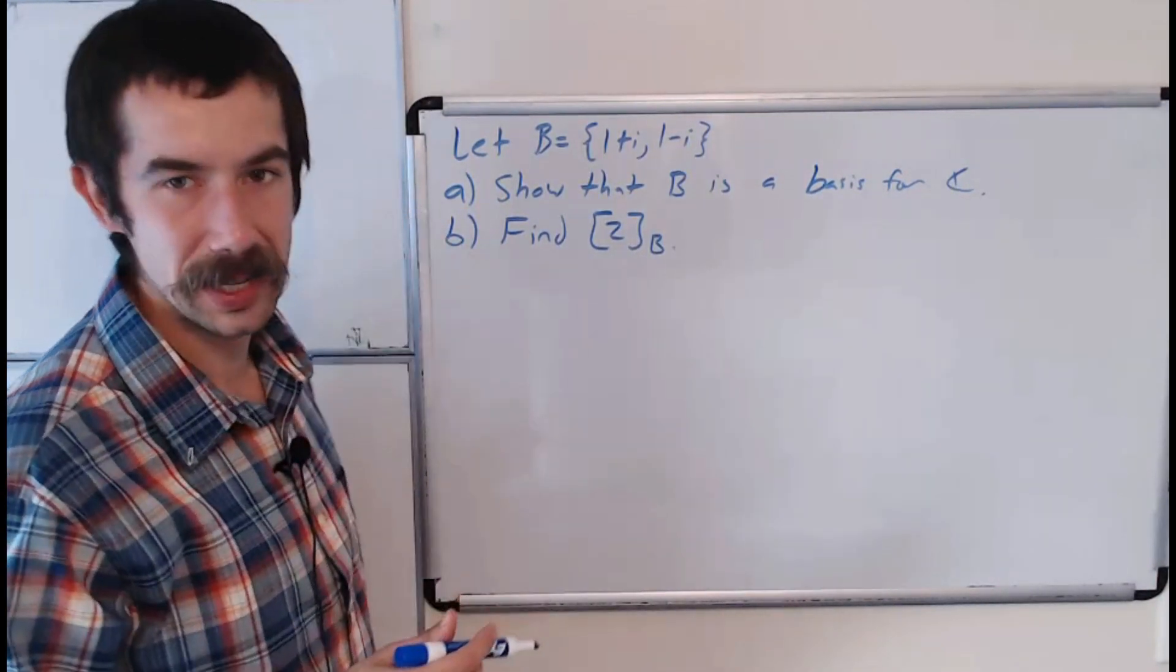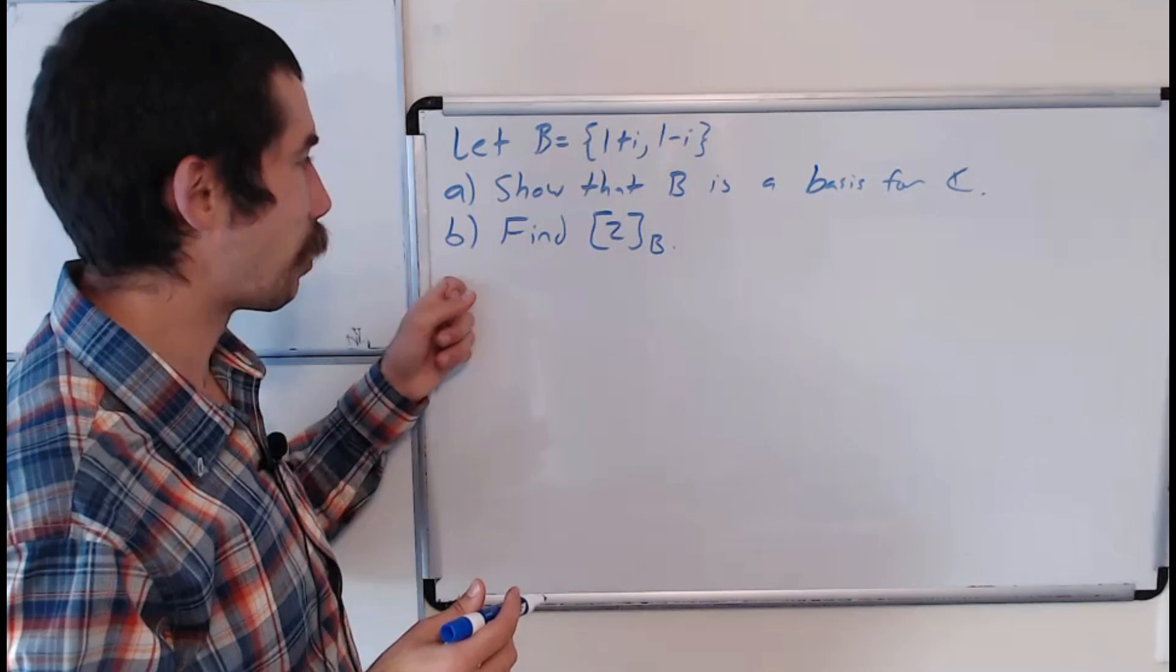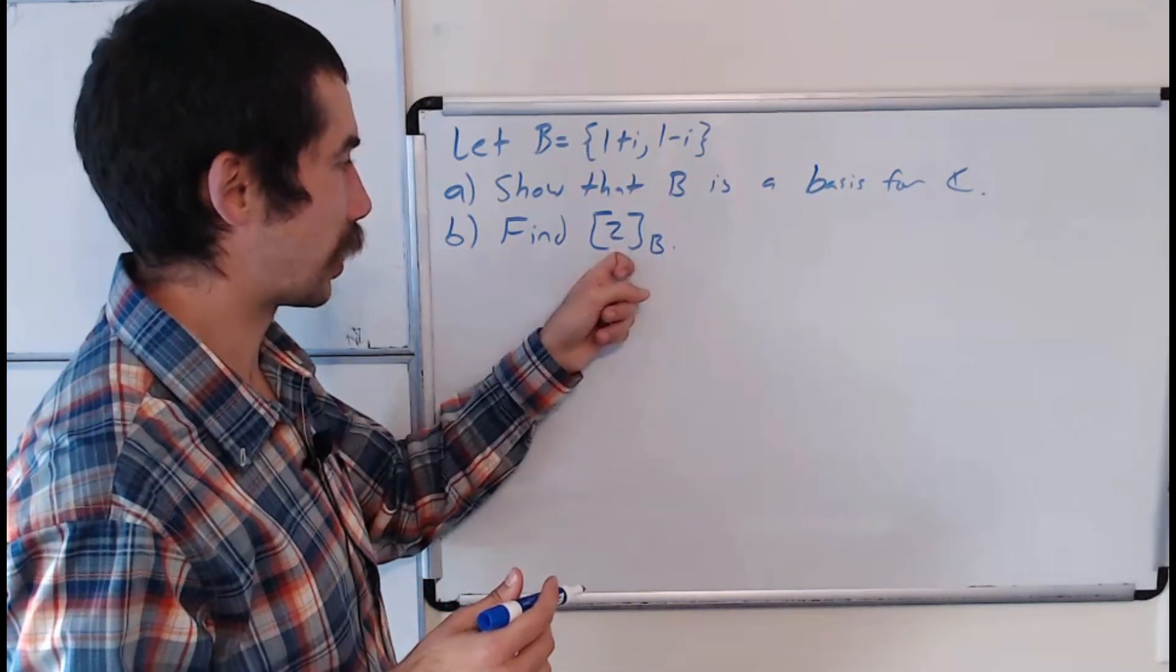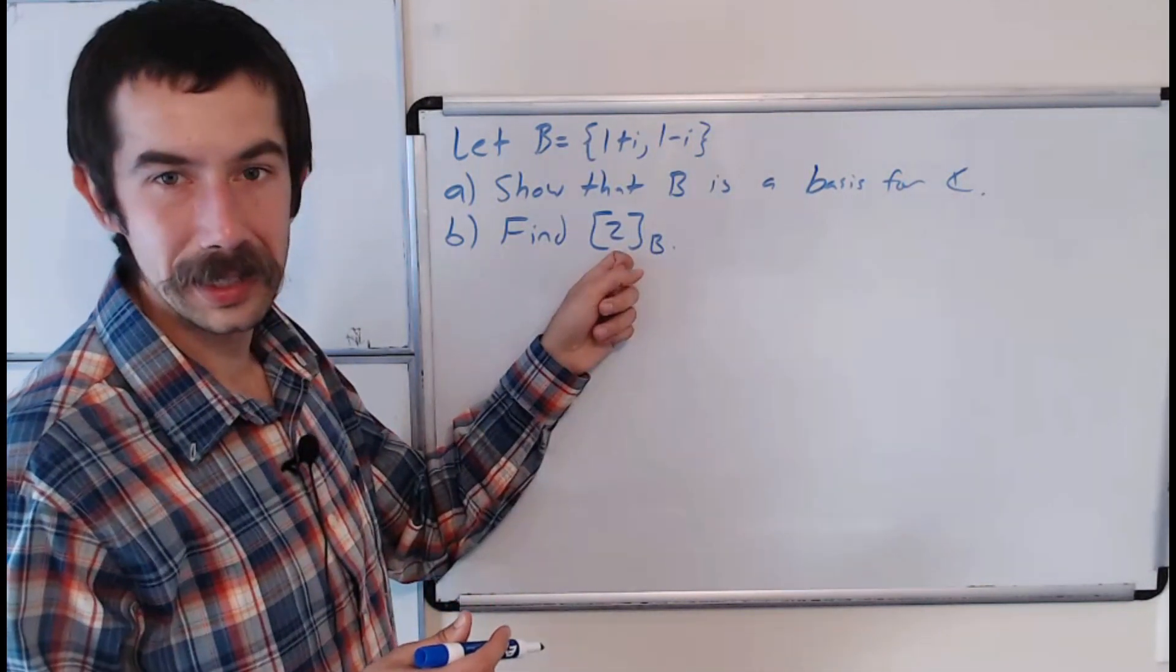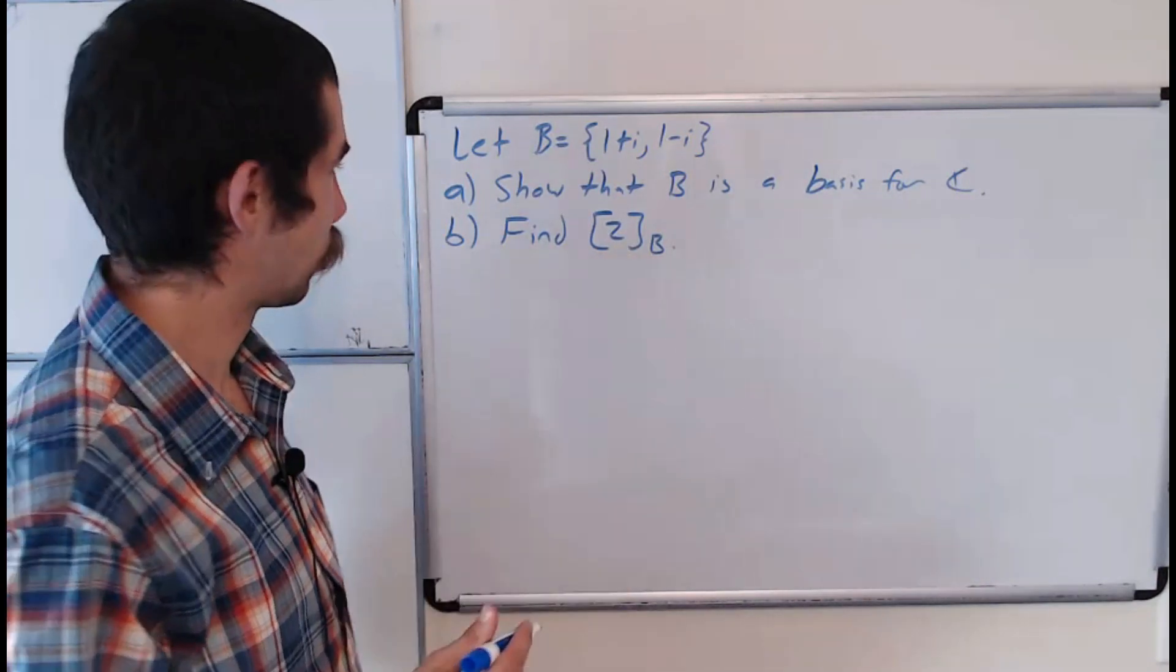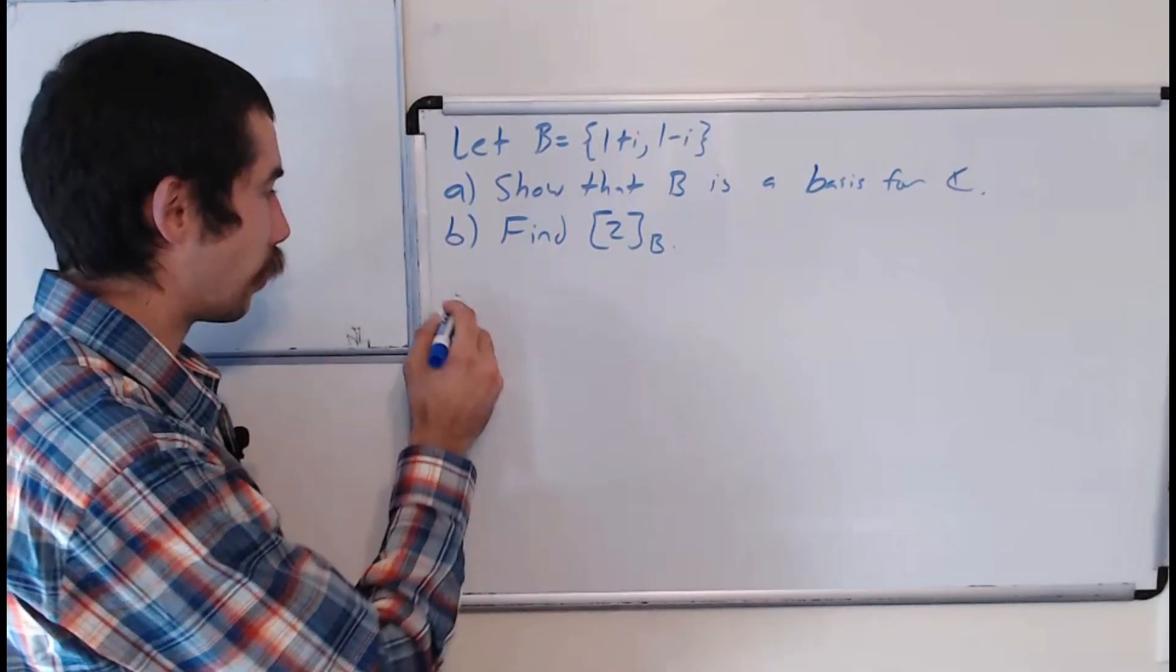We want to show that this set is a basis for ℂ, and then we want to find the B-coordinate vector for the complex number 2. Okay, so for part a: